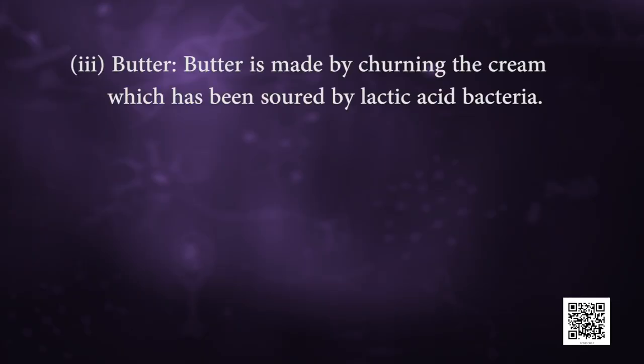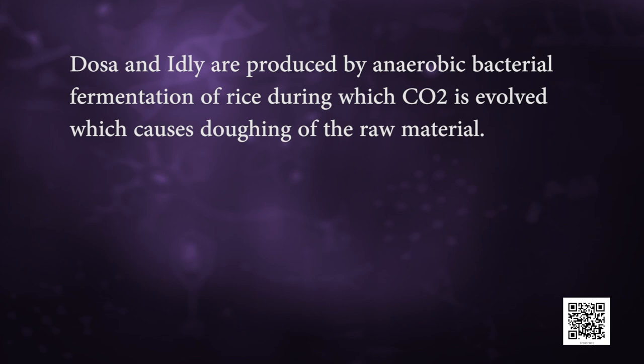Next is butter. Butter is made by churning the cream which has been soured by lactic acid bacteria. Some other important foods produced in whole or in part by microbial fermentation include pickles, sausages, etc. Different microorganisms are added to specific stages of food production to produce the desired effect. Dosa and idli are produced by anaerobic bacterial fermentation of rice, during which CO2 is evolved, causing the doughing of the raw material.